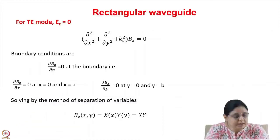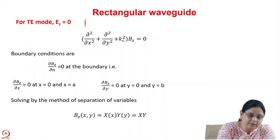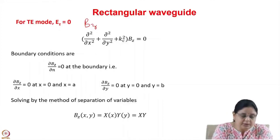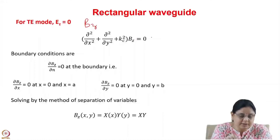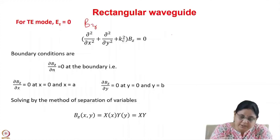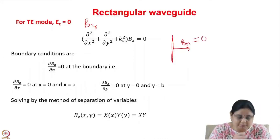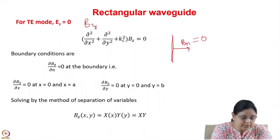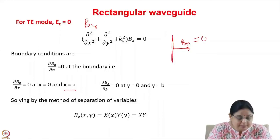For the TE mode, Ez = 0, so Bz will exist and we need to solve the wave equation: ∂²Bz/∂x² + ∂²Bz/∂y² + Kc² Bz = 0. The boundary condition for the magnetic field is that the normal component must be zero at the boundary, giving ∂Bz/∂n = 0. This means ∂Bz/∂x = 0 at x = 0 and x = a, and ∂Bz/∂y = 0 at y = 0 and y = b.